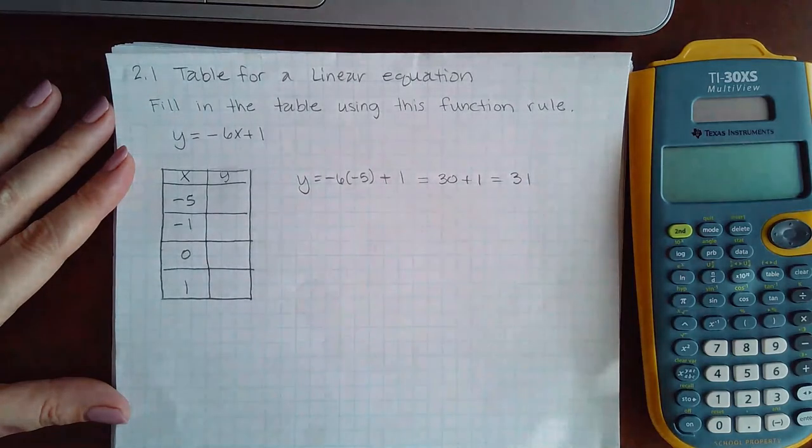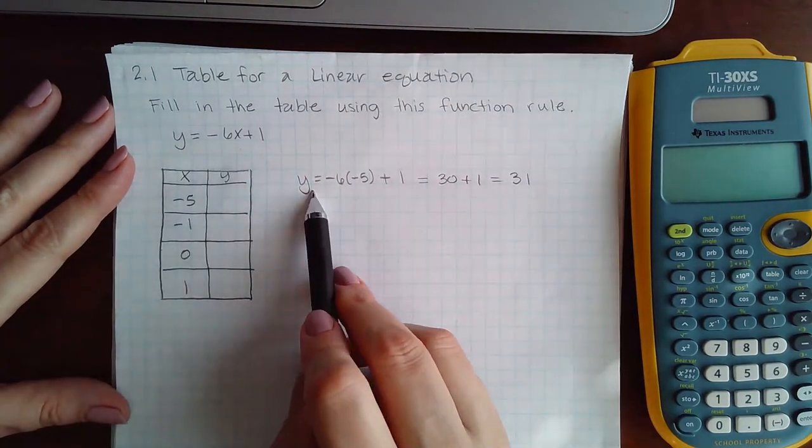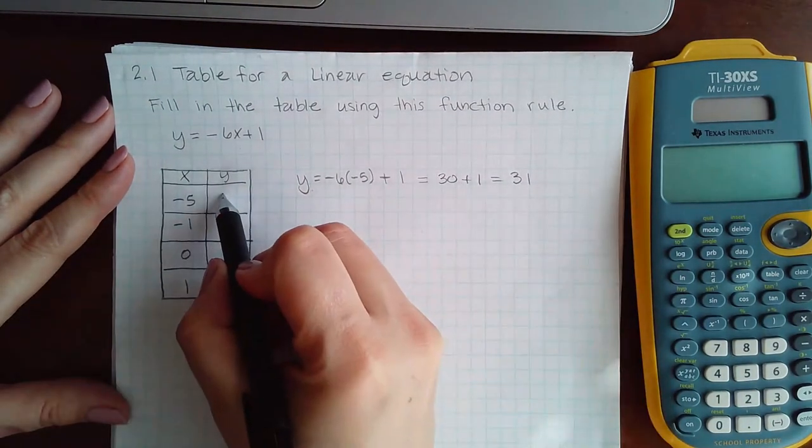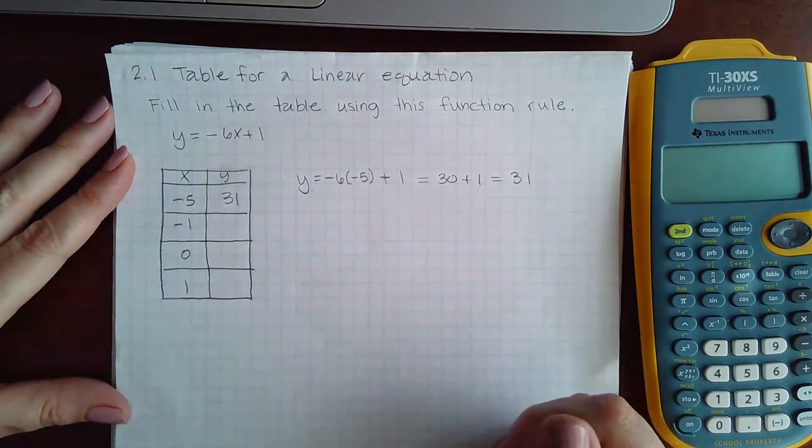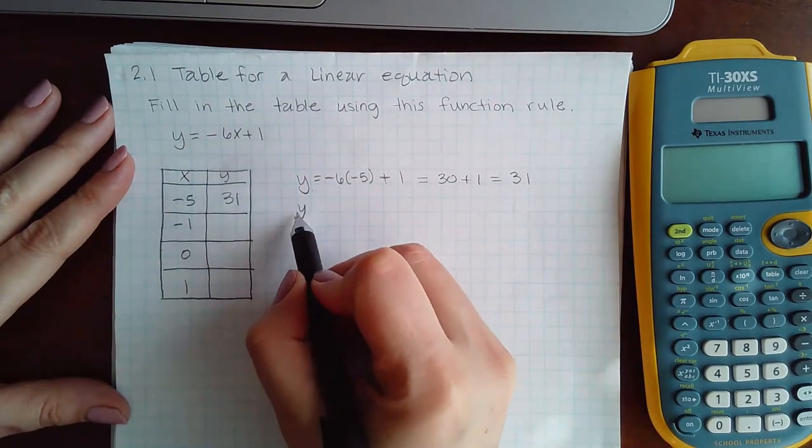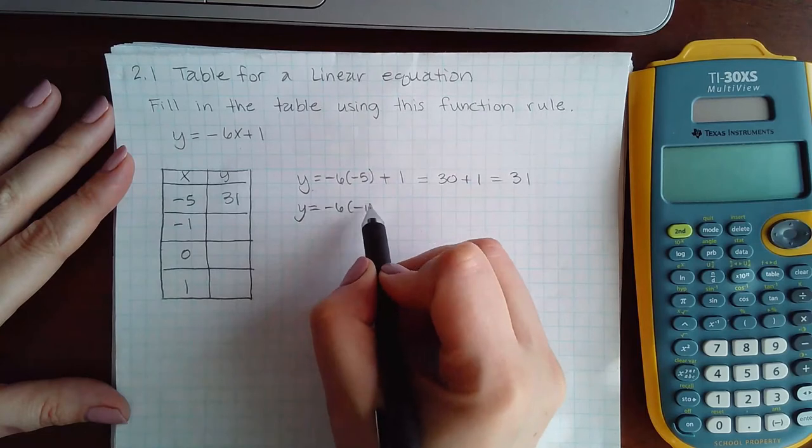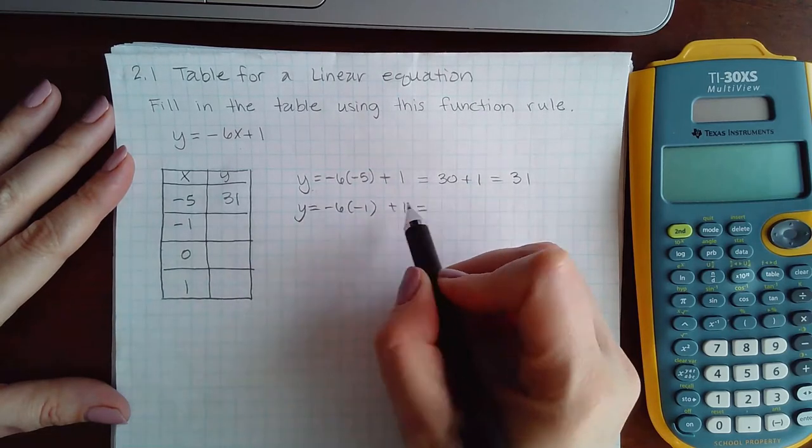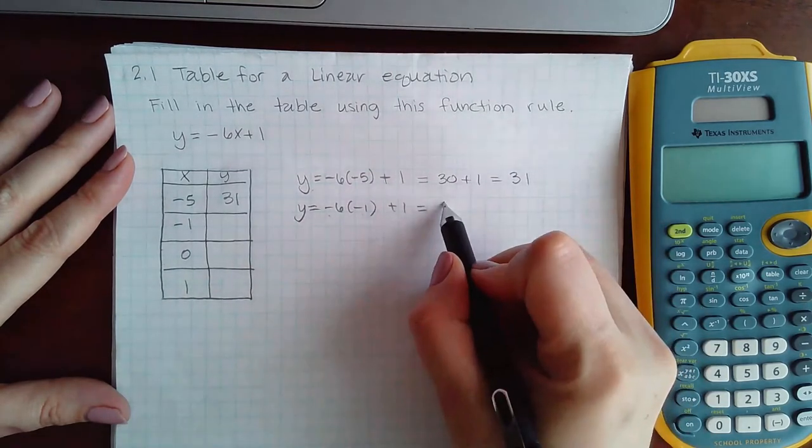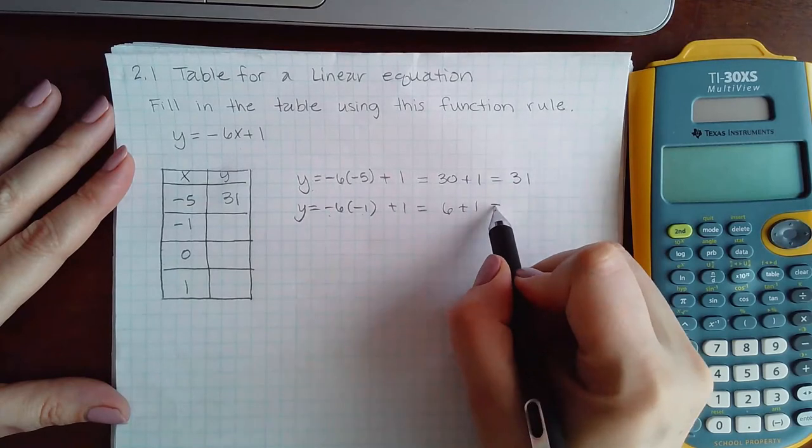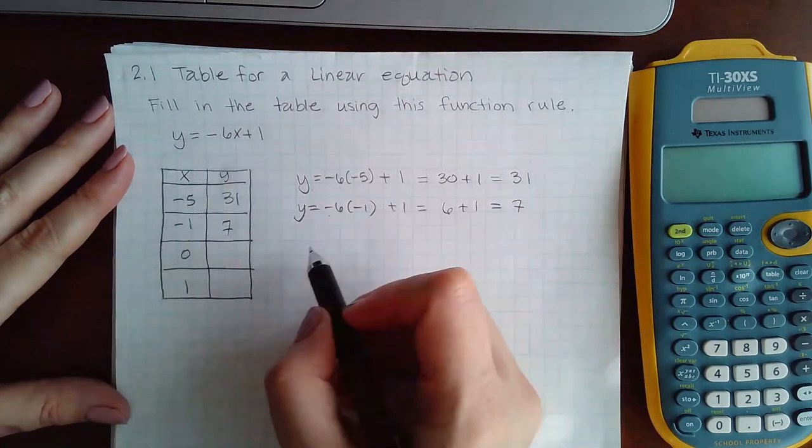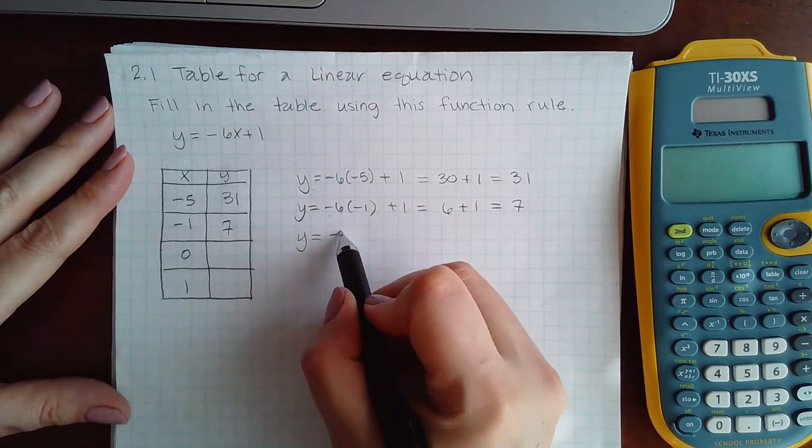So my y value ultimately equals 31. Then the next y value, I'm going to plug in negative 1. So negative 6 times negative 1 is positive 6, plus 1 is 7.